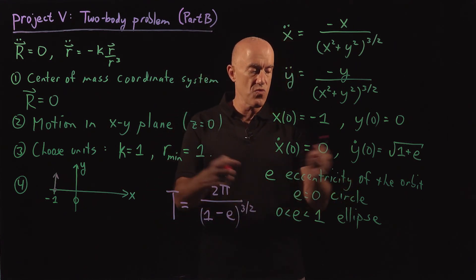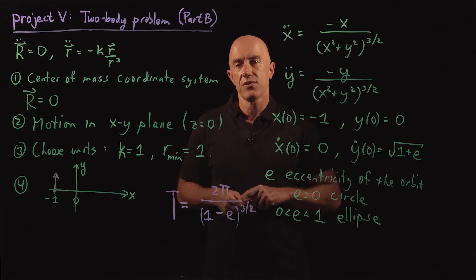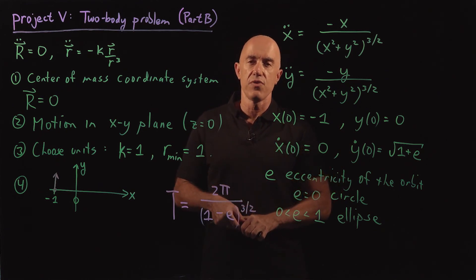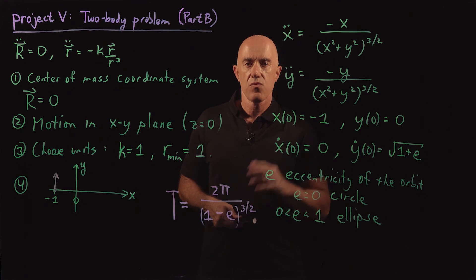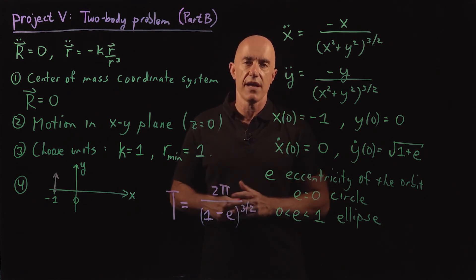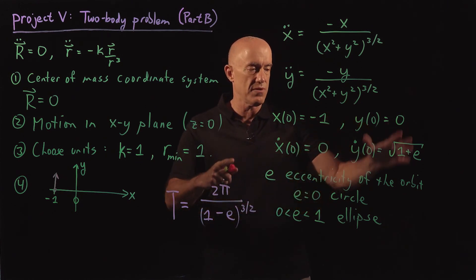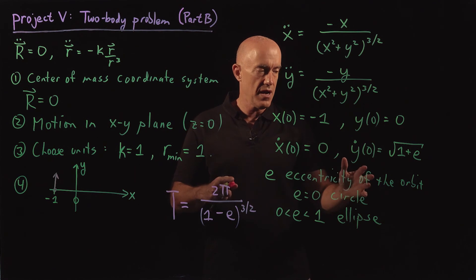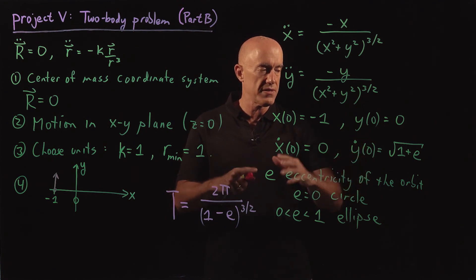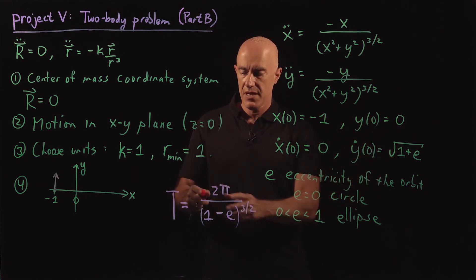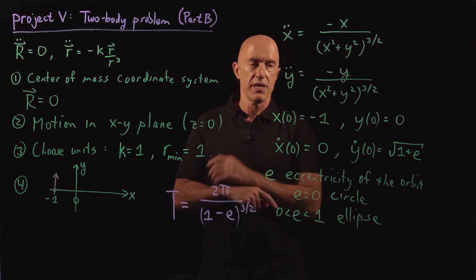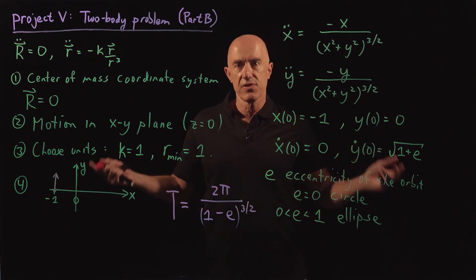You can actually work all of this out using an earlier reading problem I gave you where you computed the Keplerian orbits using a root finding method. You can go back to that earlier problem and work out all these orbits in terms of the ellipse and also work out the period. But I give it to you.